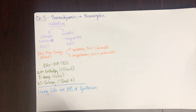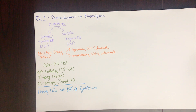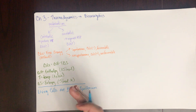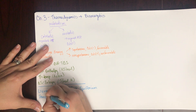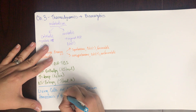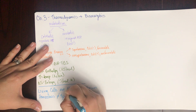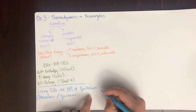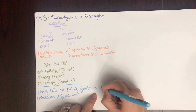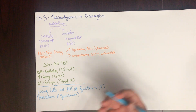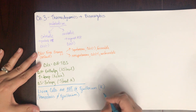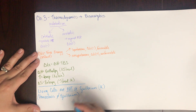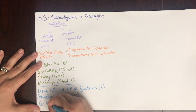The only time a living cell would be at equilibrium is if it were dead. Living cells are not at equilibrium. There is a term — homeostasis — that describes how living cells maintain certain variables within a range. Homeostasis is not equilibrium. Since we're talking about equilibrium, we would normally use the equilibrium constant K, but we can't use K because we're not at equilibrium.